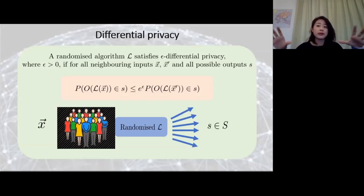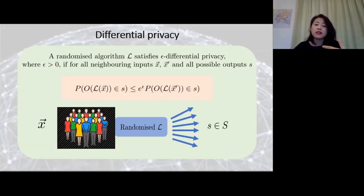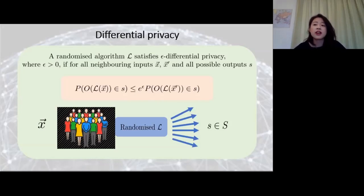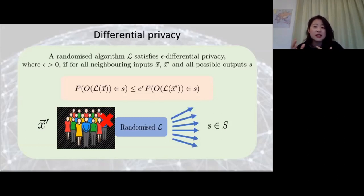One way of achieving that is to say the net result of an algorithm performed on the data set is not very dependent on individual data—so if someone decides not to send their data in, it won't make a big difference to the net result, preserving individual privacy. More mathematically: if we have a randomized algorithm taking inputs from some data set represented by vector X, and someone decides not to send in their data so the net input becomes X prime, then we want the probability of getting possible outputs from input X compared to X prime to not differ by very much—quantified by e to the power of epsilon where epsilon is very small.